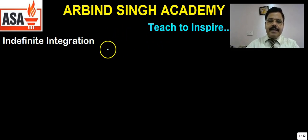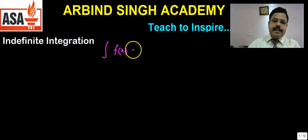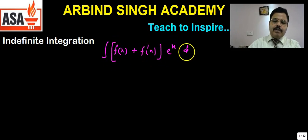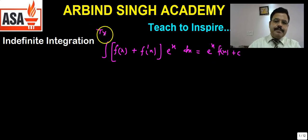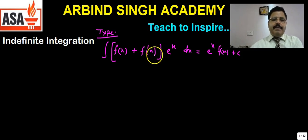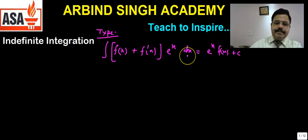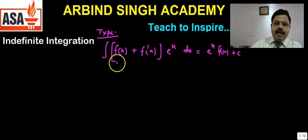There is a special type of integral: if we have integration of [f(x) + f'(x)] multiplied by eˣ, then its integration is eˣ·f(x) + C. This is a particular type, and we will work on this type. The formula is: ∫[f(x) + f'(x)]eˣ dx = eˣ·f(x) + C.